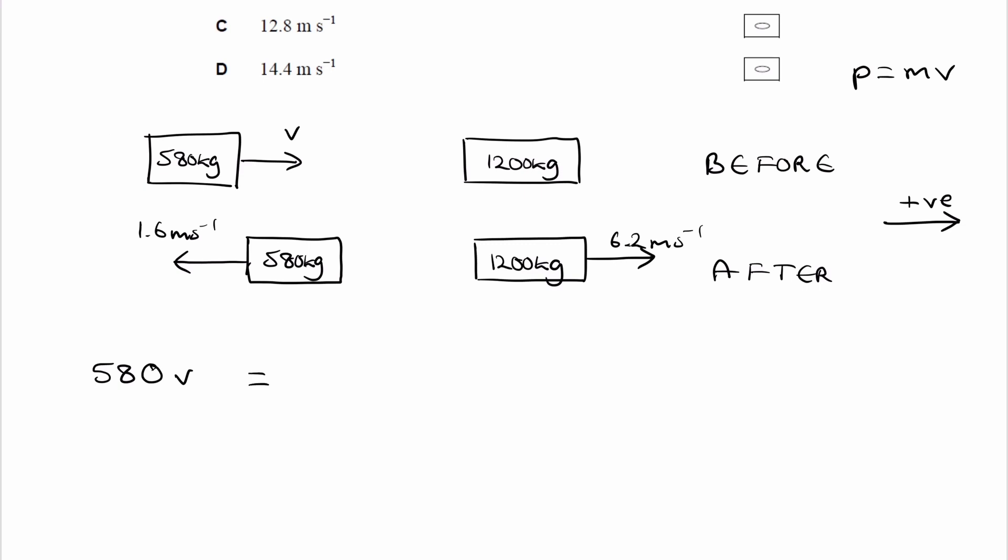And the final momentum would be the van, 1200 times 6.2, positive again as it's going towards the right, minus this momentum which is going towards the left, hence the minus. So minus 580 times 1.6.